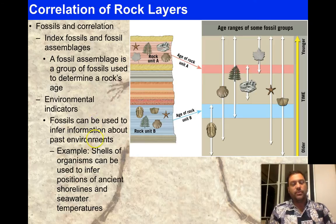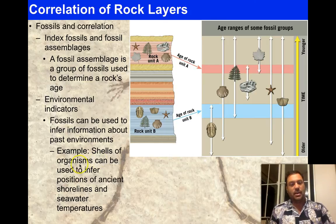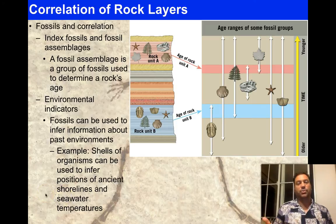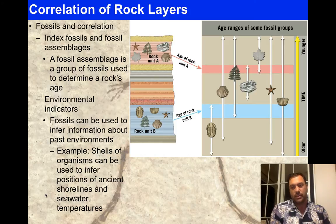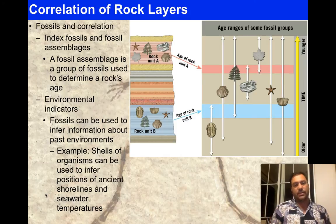Fossils can also be used to infer information about past environments. Shells of organisms can indicate positions of ancient shorelines and seawater temperatures. If you're finding a T-Rex, you're not in the deep ocean. If you're finding scallops, you're probably near a coastline. If you're finding ferns, you're probably in a marshy or coastal environment. You wouldn't expect to find bird bones fossilized in the middle of the ocean — these are the environmental indicators.